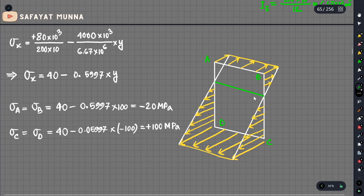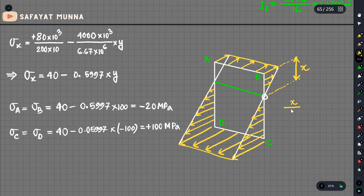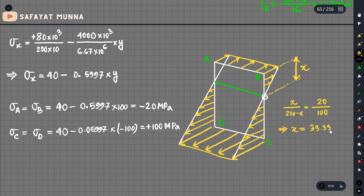This line is not the neutral axis. The neutral axis is a point that we can see. Using similar triangles — x divided by the total length equals 200 minus x. The height values are 20 and 100. So the result is 33.33 mm. We denote the neutral axis location as 33.33 mm from the reference.